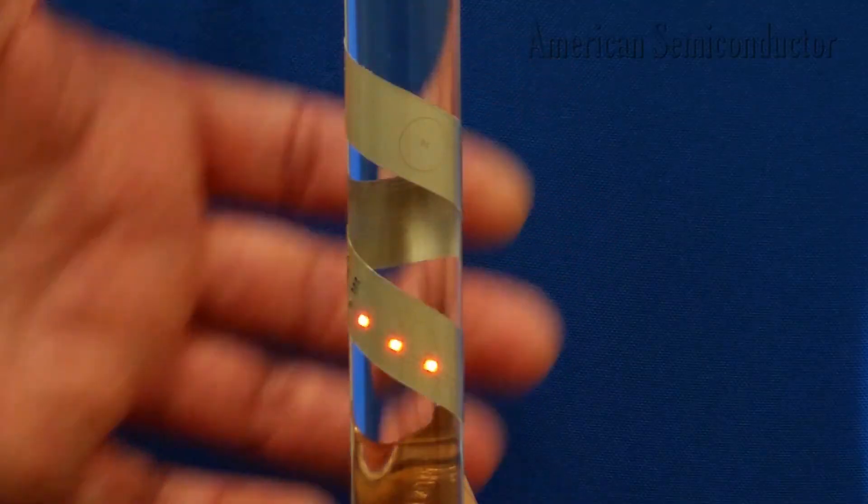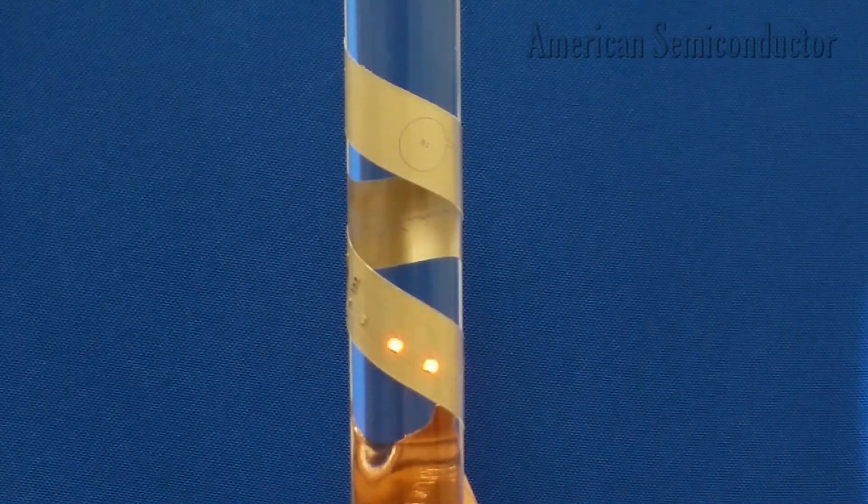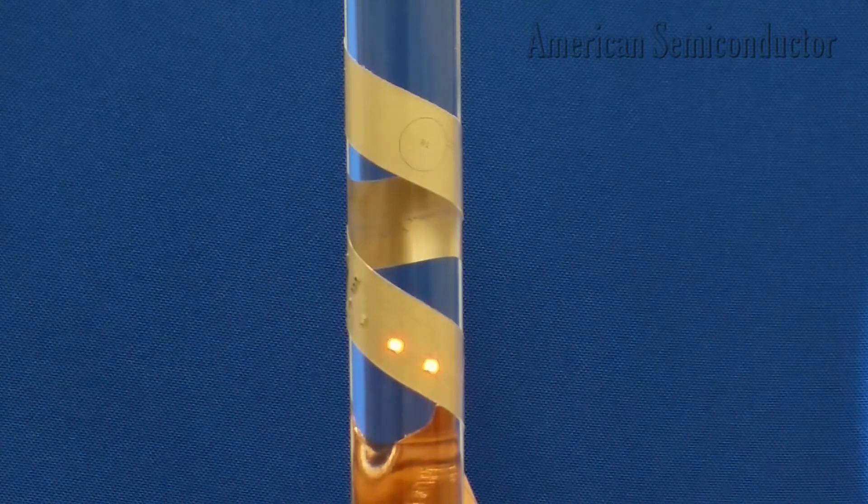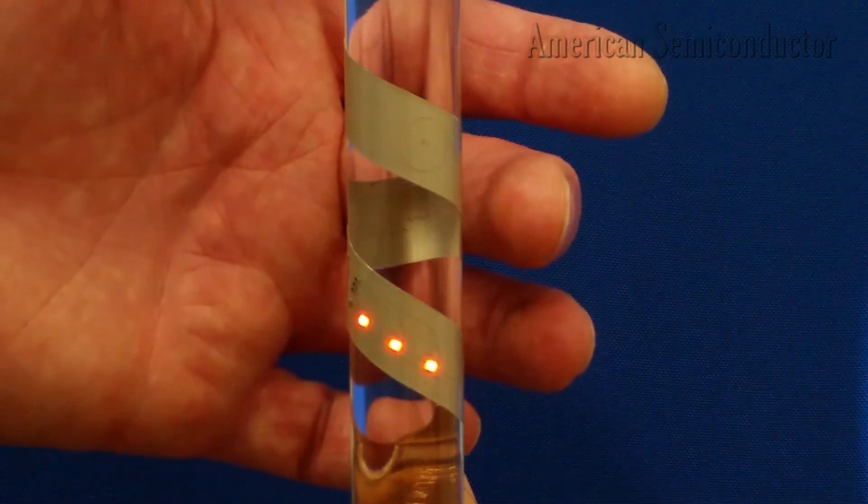When the Flex SoC detects a touch on the right sensor, it changes the blink rate of the LEDs. Here, the Flex SoC was programmed with four different LED speed settings.